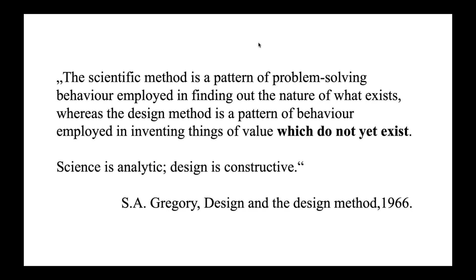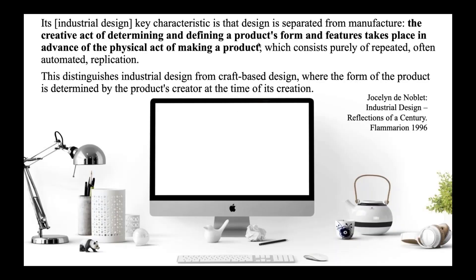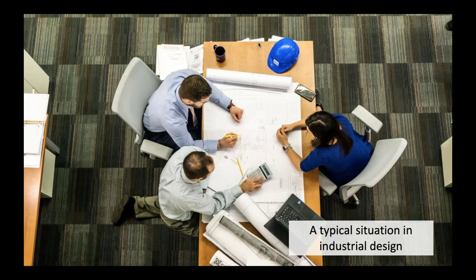This is also something designers very often say — they think about the future, how things should be. Here are some examples of industrial design products: lamps, the iMac, keyboards, and so on. A very important characteristic of industrial design is that it's separated from manufacturing — the creative act of determining and defining the product and producing it afterwards. When you look at a lamp, it's a mass production process where you design the form and function, and then produce it in a factory. Industrial design is also separated from craft-based design where the maker creates the form during the building process. And in the IT or software business, we very often do a kind of craft-based design. To understand the difference, here is a typical industrial design situation: people sitting at a desk talking about the product and its design.